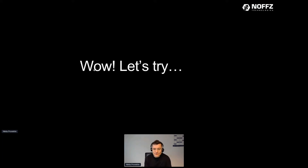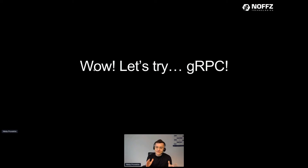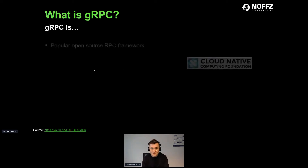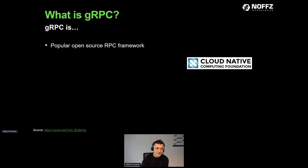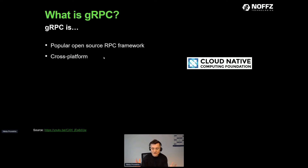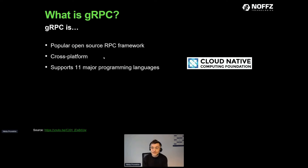Normally we say 'wow' — and I was thinking how can we address this. gRPC is the answer. gRPC is a popular open-source RPC framework supported by the Cloud Native Computing Foundation, a non-profit. It's cross-platform — it can run on Windows and Linux. It supports 11 major programming languages including C#, Python, Go, Java, and many more, and since it's CNCF, it also supports web.